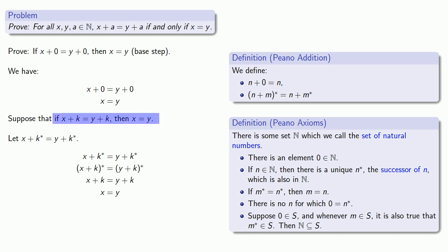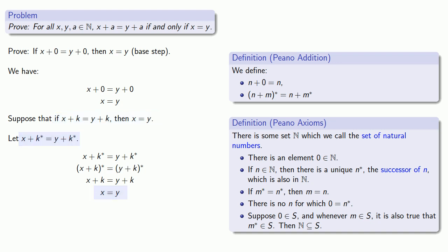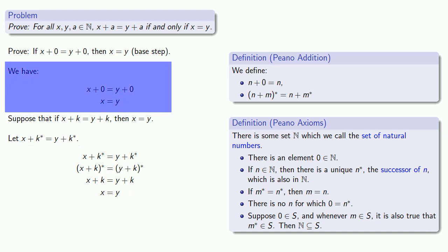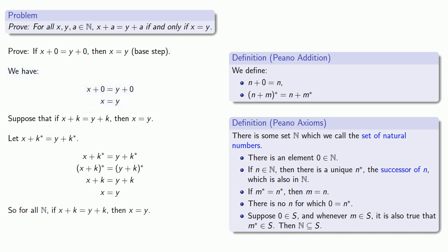If our statement is true for k, then our statement is also true for the successor of k. And since we proved the base step, we know that for all natural numbers, if x plus k equals y plus k, then x is equal to y.